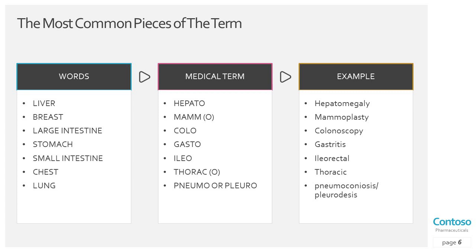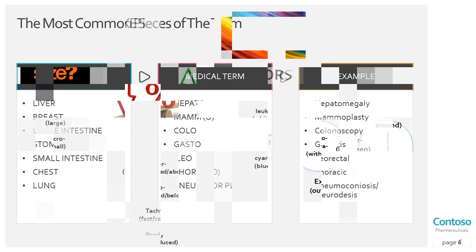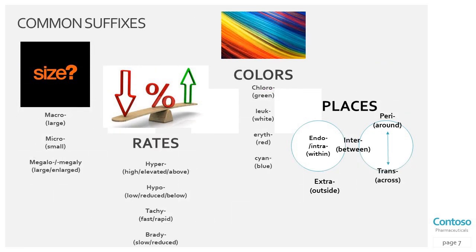Be careful — both men and women have thoraco, but only women have mammo. That's the most common pieces of the term. Now we can move on to common suffixes. Those common root pieces indicate body parts of the human body, and we can mix them up with suffixes.